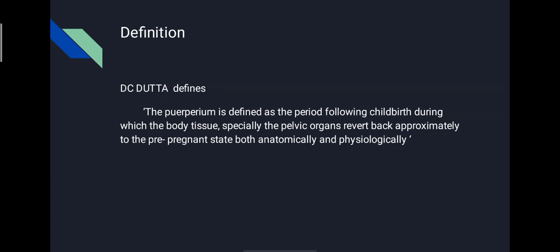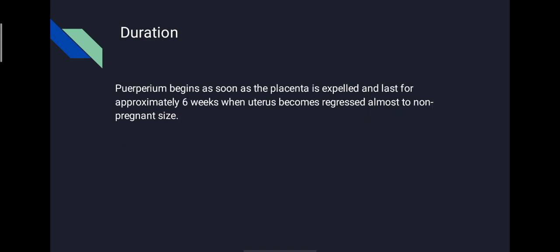The definition of puerperium. According to D.C. Dutta, puerperium is defined as a period following childbirth during which the body tissue, especially the pelvic organs, revert back approximately to the pre-pregnant state, both anatomically and physiologically. The duration of puerperium begins as soon as the placenta is expelled and lasts for approximately six weeks, when the uterus becomes regressed almost to non-pregnant size.